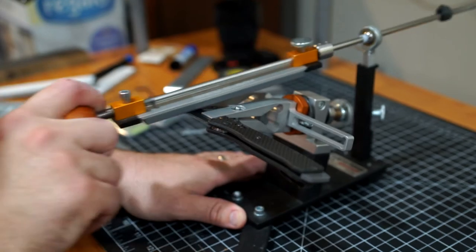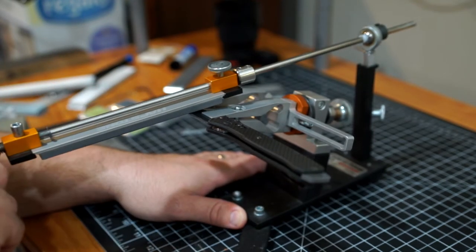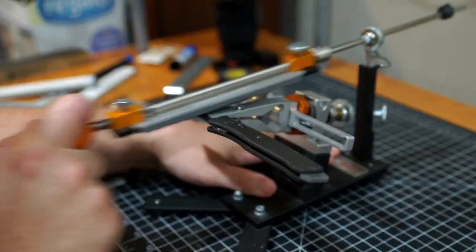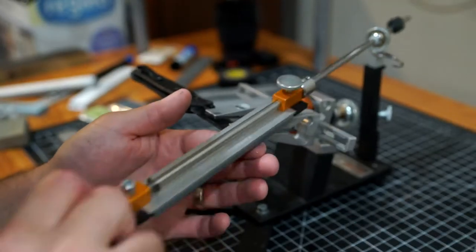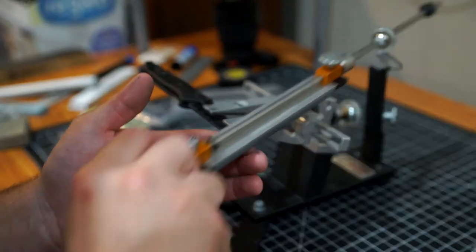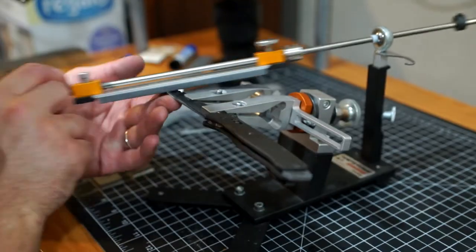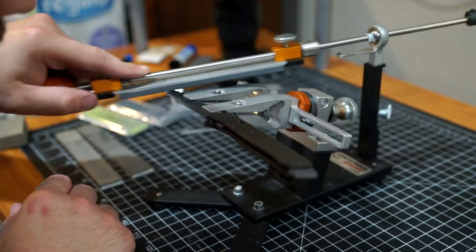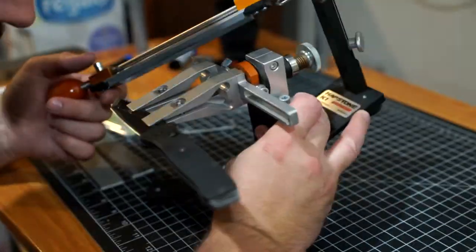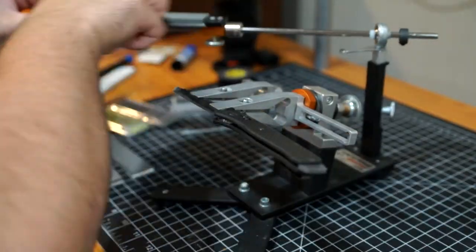They still do leave deep scratches, so when you go through the high polish, if you don't remove them you will see them at the end. The silicon carbide seems to be a nice bridge, so there's some food for thought.